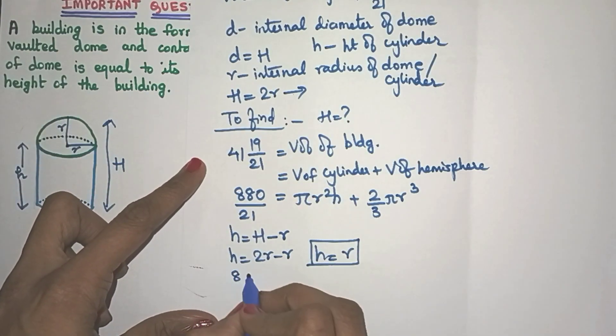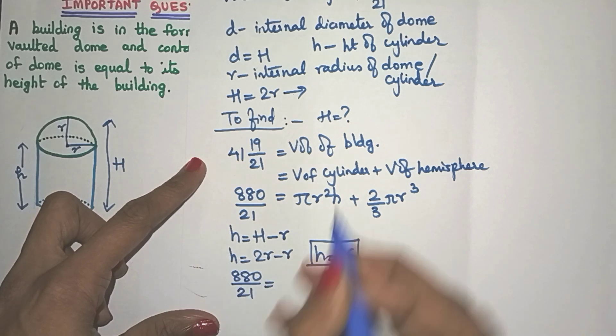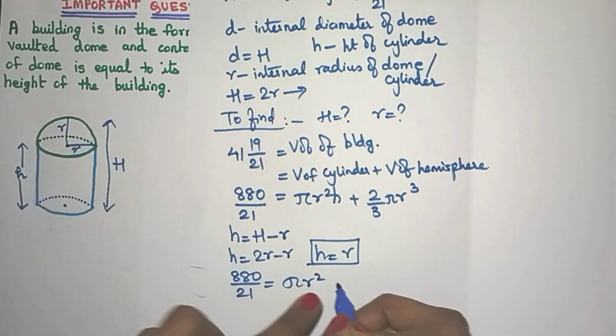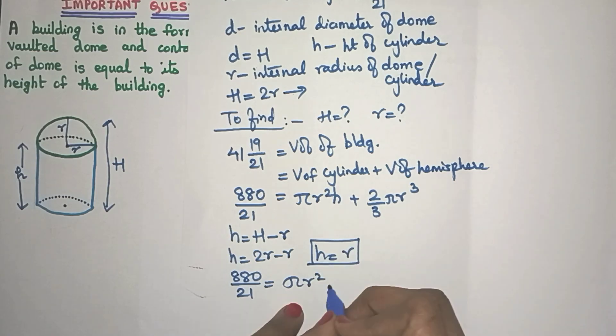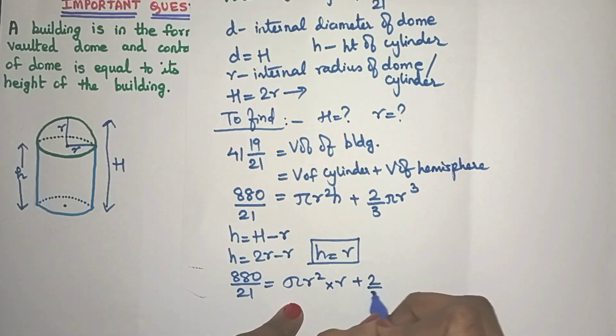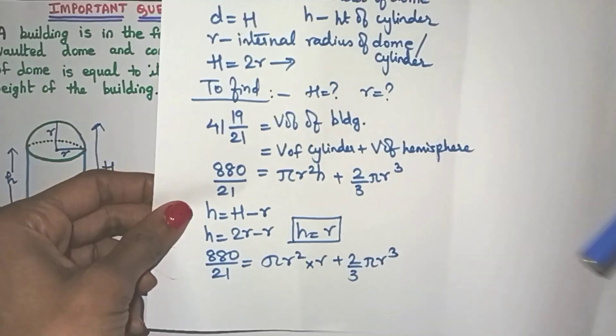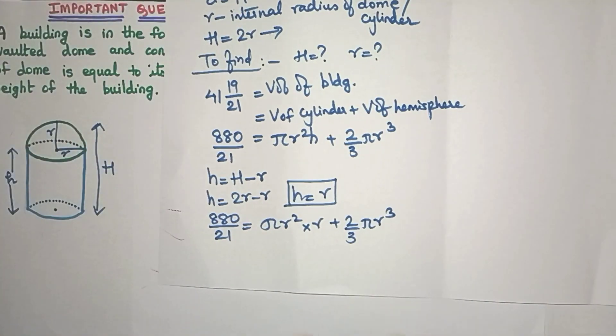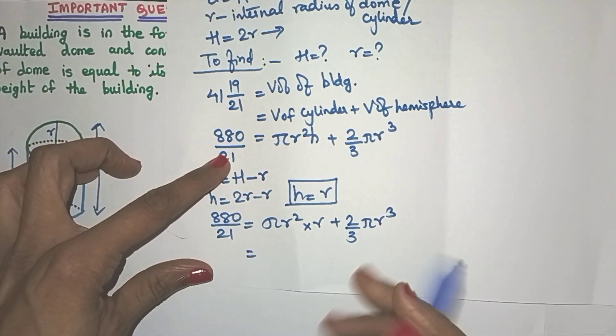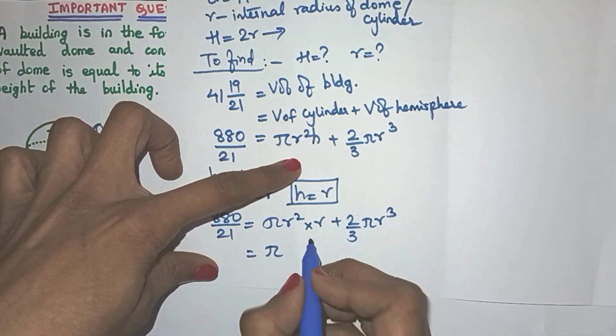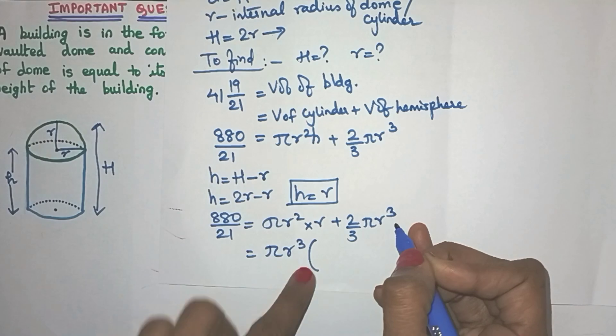So now I can substitute. Now because I want to find out the value of radius, I will keep R as it is. Instead of H, I will put R. I hope you got that. So here it will be as it is. So now we have only one variable. So now it will be much easier. So let's see what we can take out common.